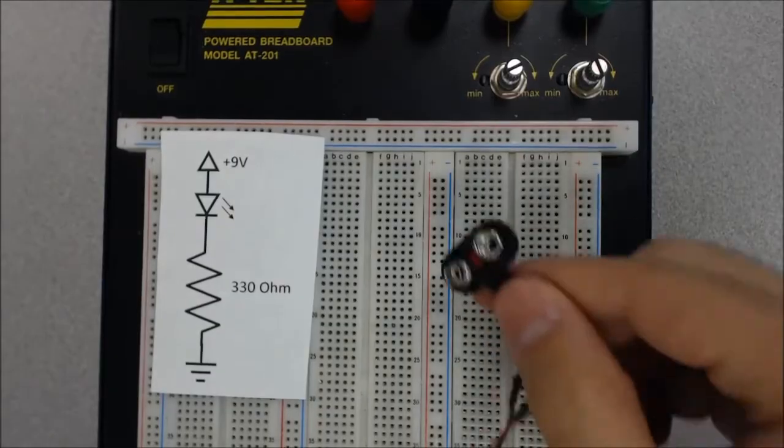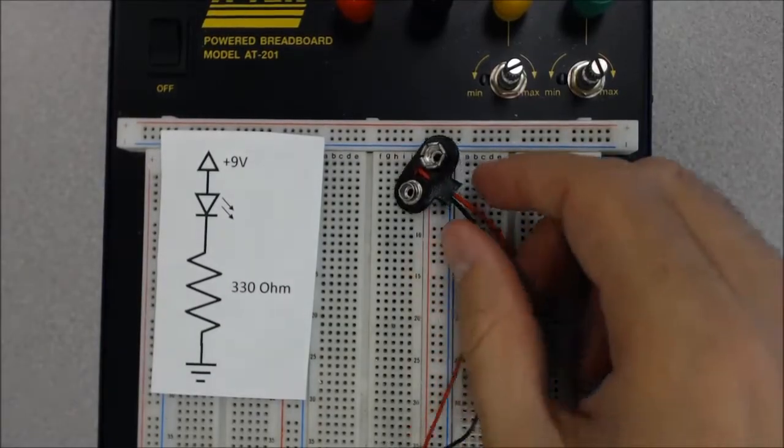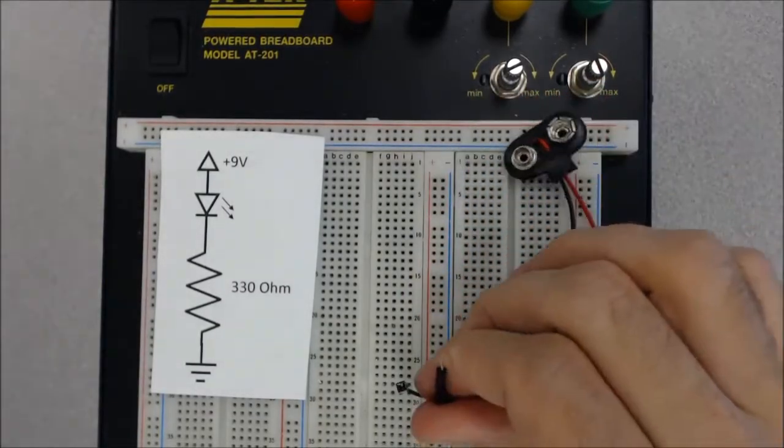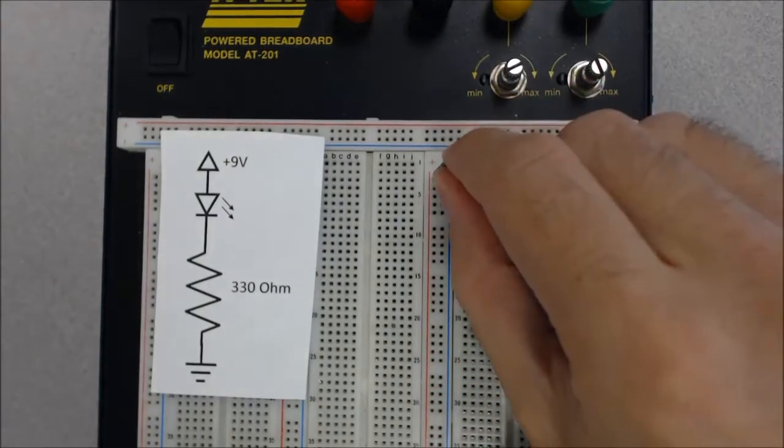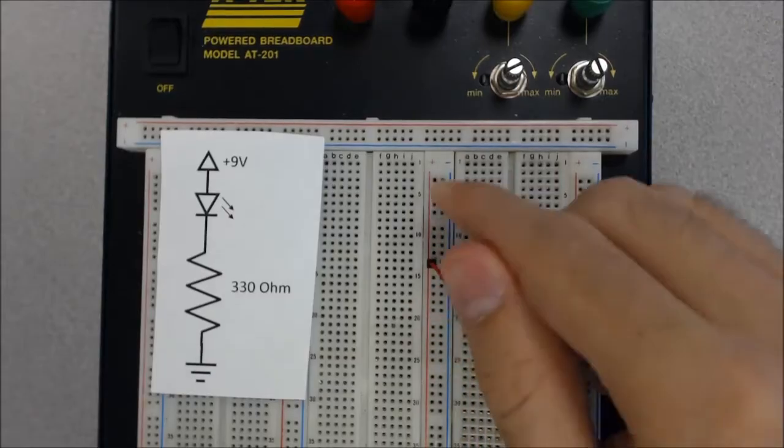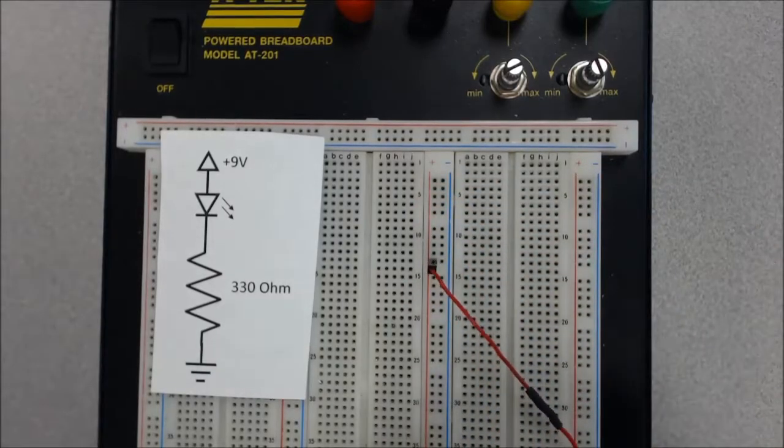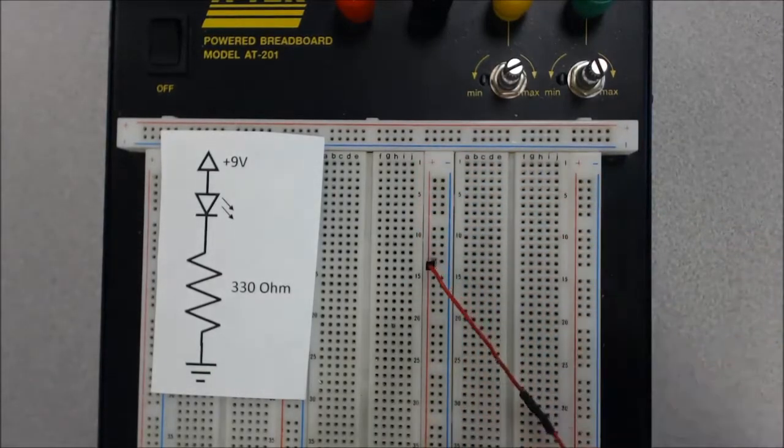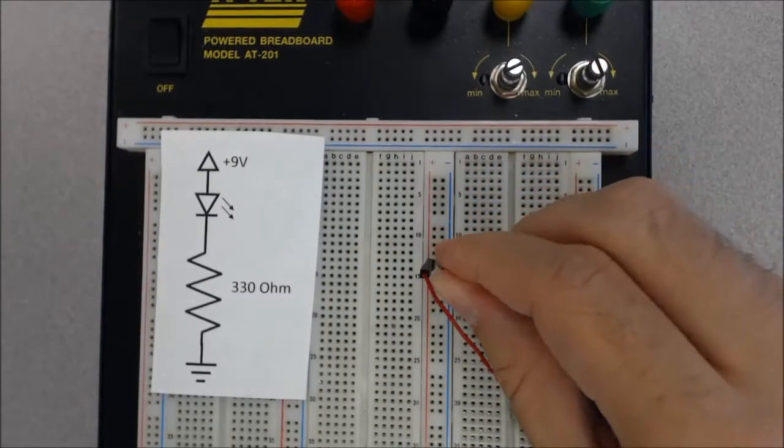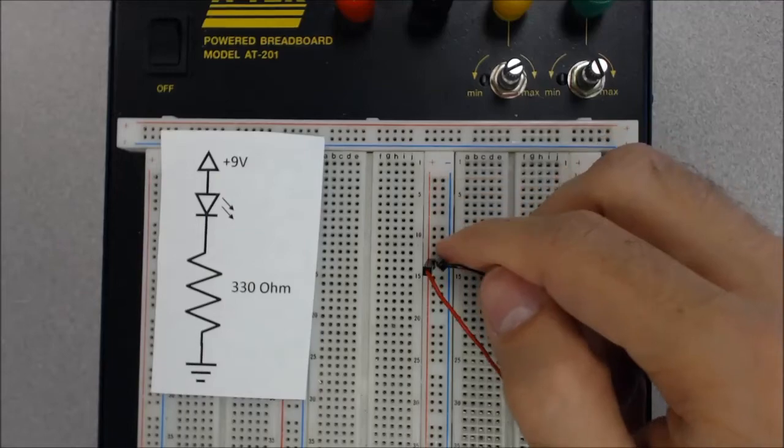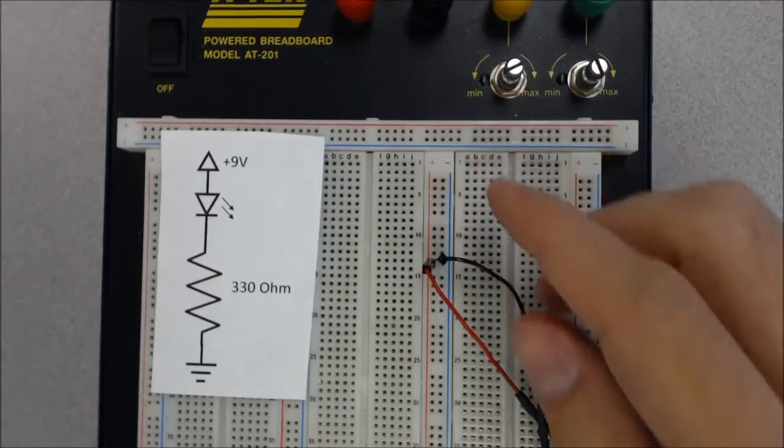So here I'm going to use this connector to hold my nine volt battery, and it breaks out the positive side and the ground. So what I'm going to do is I'm going to plug the positive side here into this long rail, and it doesn't matter where I plug it in because again, the holes along the red line here are all connected together, and I'm going to plug the black wire into the blue line here.